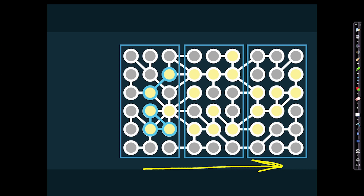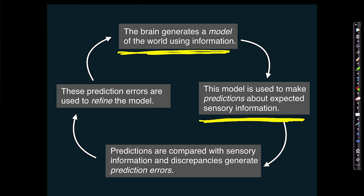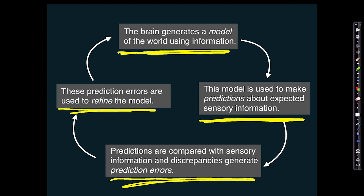The model is good, and the brain is doing this all the time — it's a cyclic, rolling process. To summarize: the brain generates a model of the world, and this model is used to make very specific predictions about sensory information. If the model is good, it should be able to predict incoming sensory information. Those predictions are then compared with the actual sensory information; any discrepancies generate prediction errors, which are passed upwards through the hierarchy and used to refine the model.